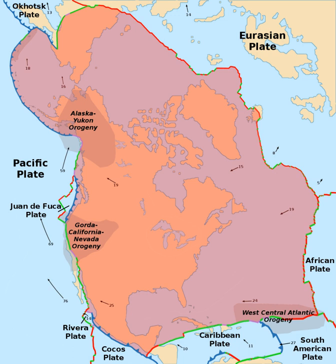On its western edge, the Farallon Plate has been subducting under the North American Plate since the Jurassic period. The Farallon Plate has almost completely subducted beneath the western portion of the North American Plate, leaving that part of the North American Plate in contact with the Pacific Plate as the San Andreas Fault. The Juan de Fuca, Explorer, Gorda, Rivera, Cocos, and Nazca Plates are remnants of the Farallon Plate.